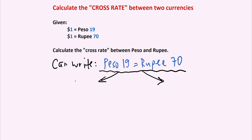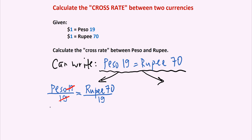Let's do the division by 19 first. We have 19 pesos divided by 19 equals 70 rupees divided by 19. Here, 19 and 19 cancel out, and what we are left with is just 1 peso equals — if you do the math, 70 divided by 19 — we get 3.68 of a rupee.